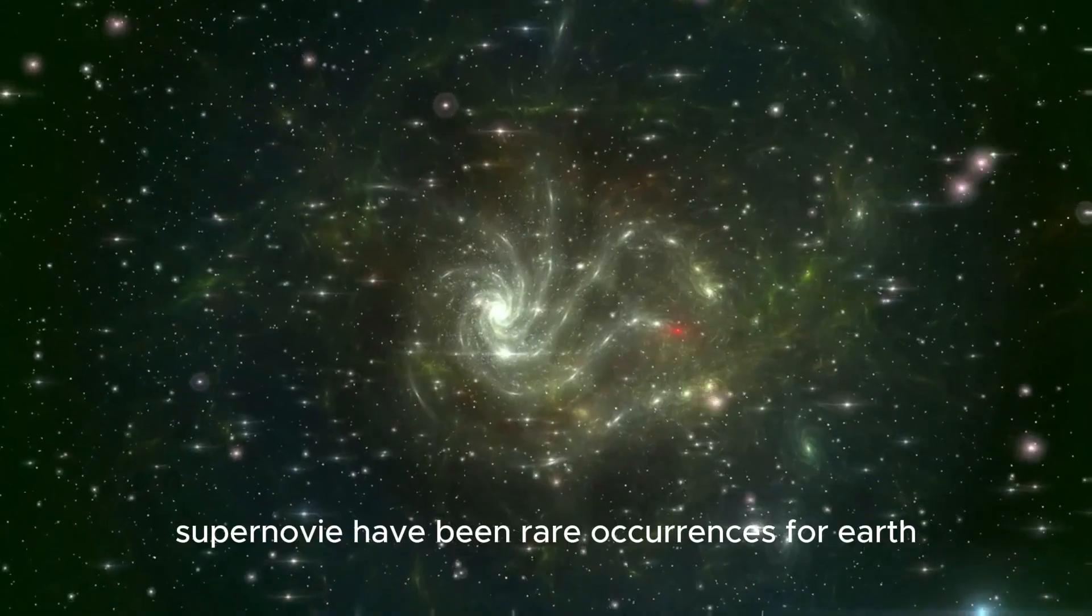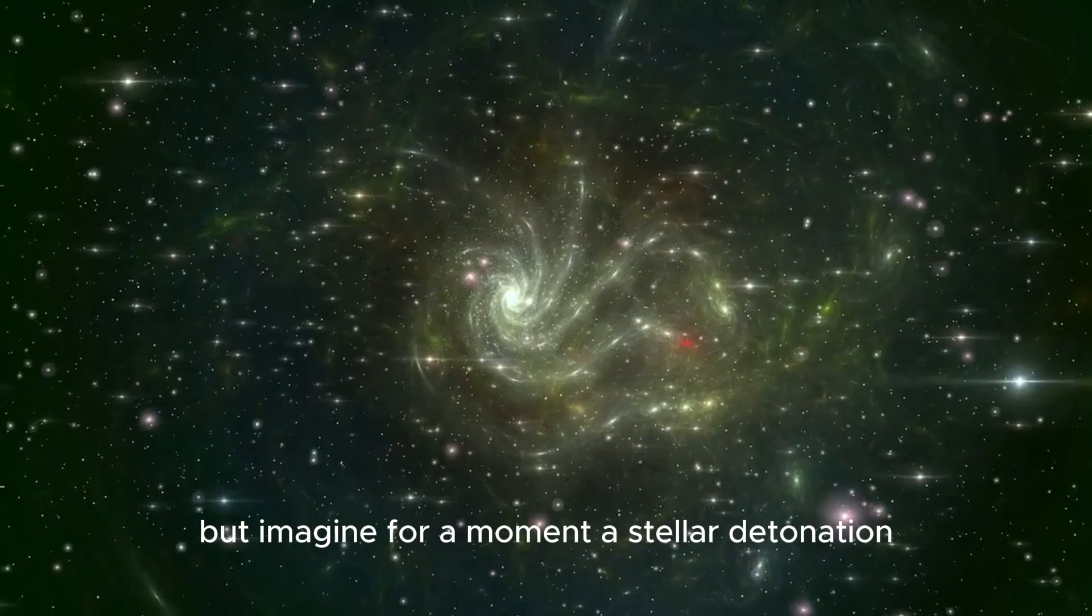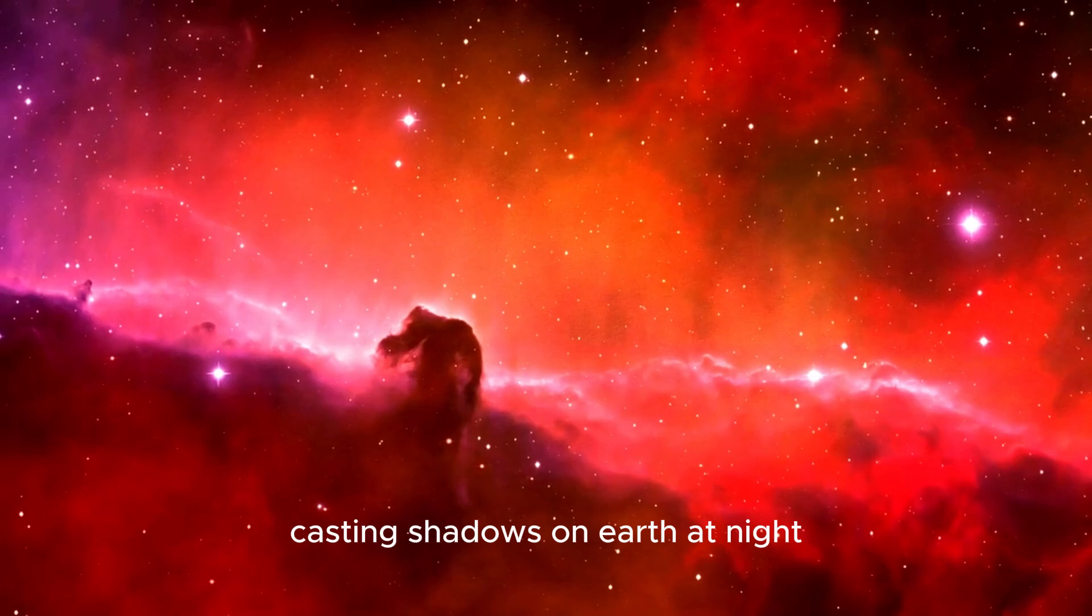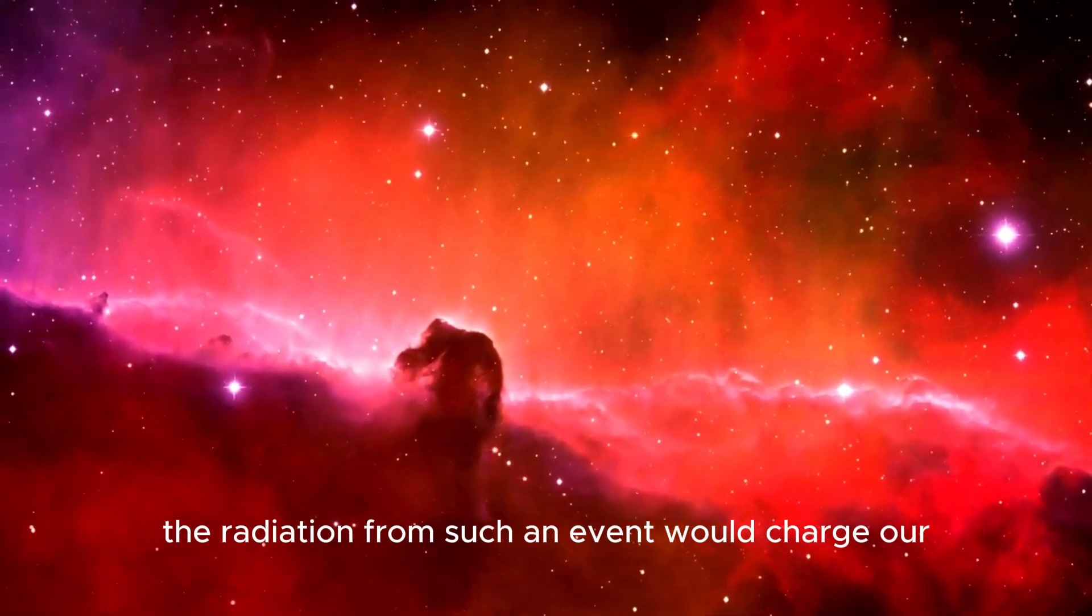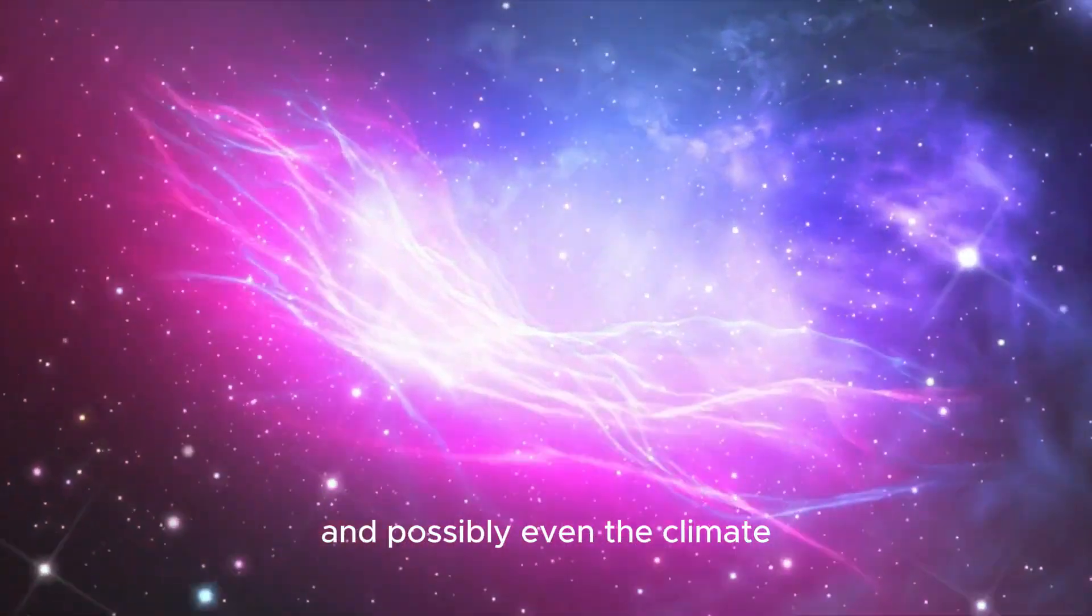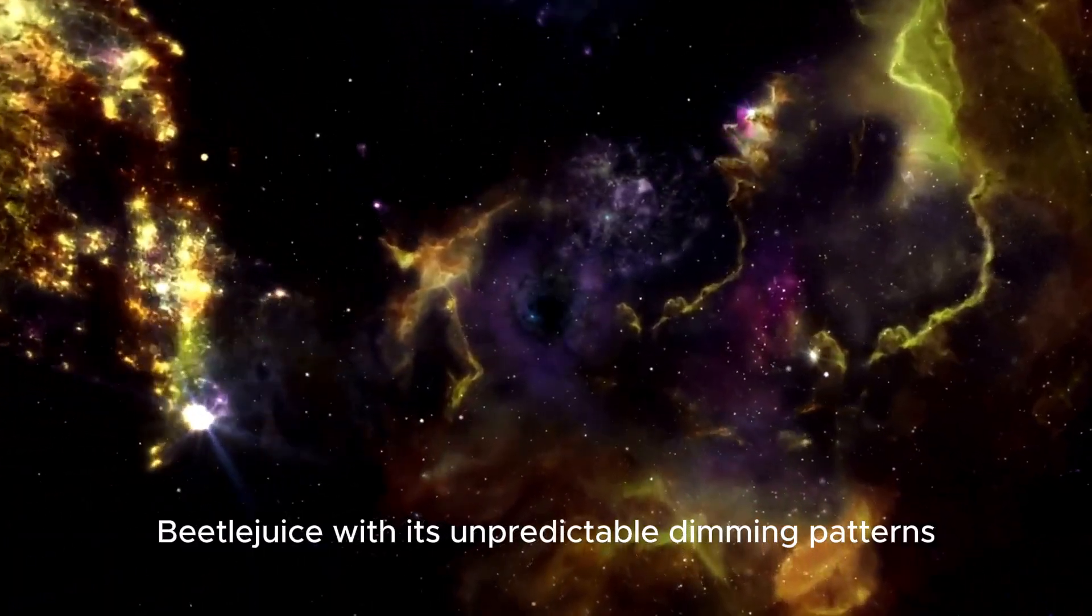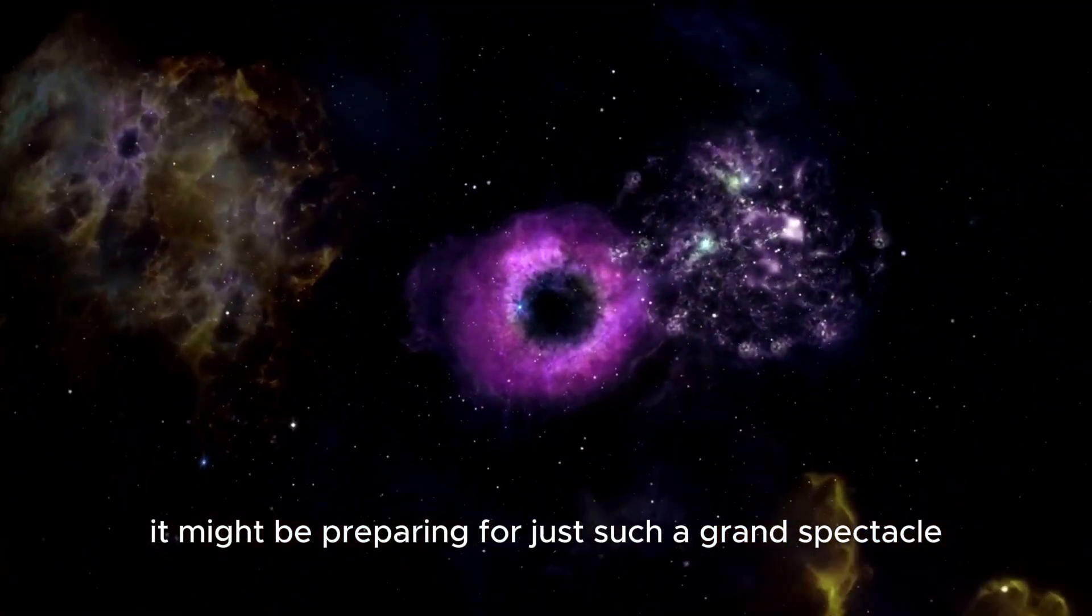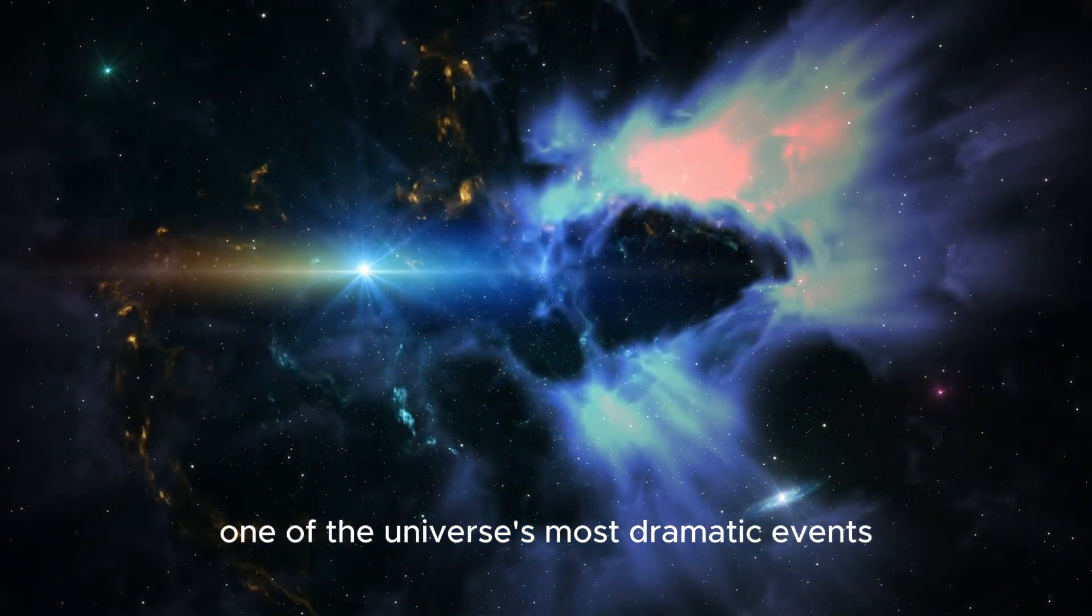Historically, supernovae have been rare occurrences for Earth. But imagine for a moment a stellar detonation so intense that it rivals the brightness of a full moon, casting shadows on Earth at night and being visible during daylight. The radiation from such an event would charge our atmosphere, potentially affecting satellite operations and possibly even the climate. Betelgeuse, with its unpredictable dimming patterns, suggests it might be preparing for just such a grand spectacle.